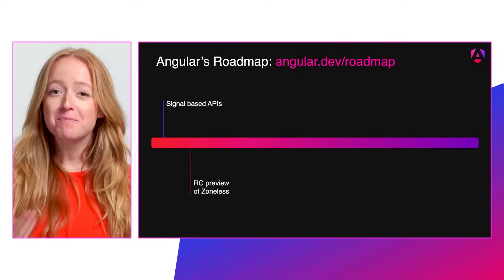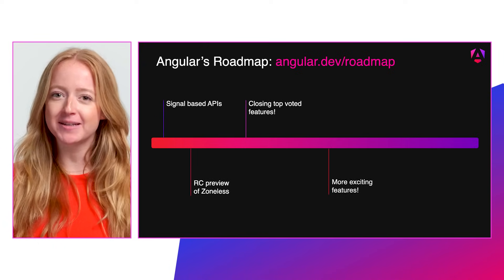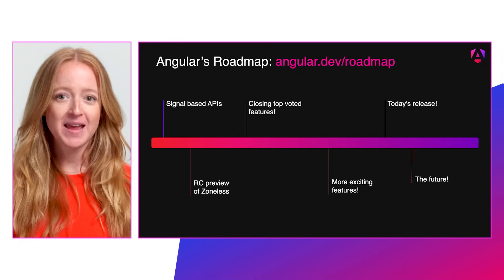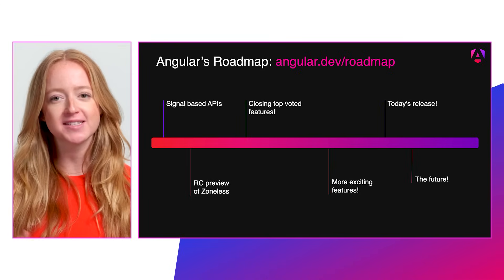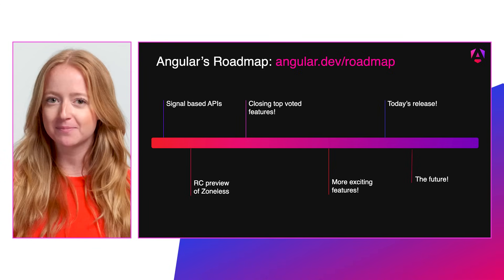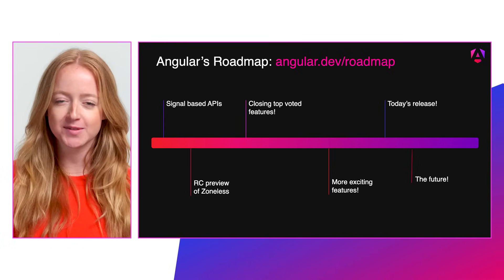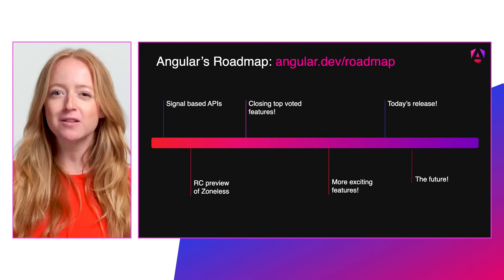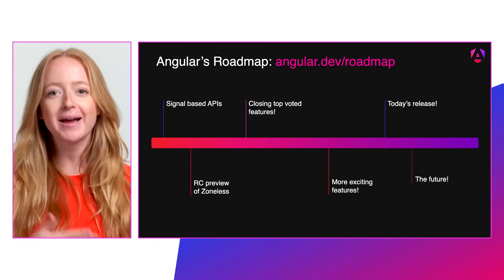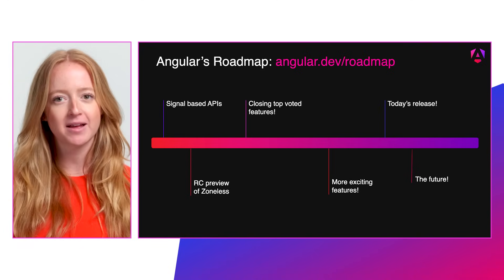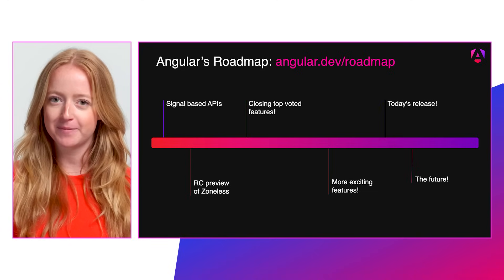Most of these features actually landed in a minor release leading up to today. That means you don't have to wait six months for the next enhancement to your Signal APIs, another step towards zoneless, or one of your top-voted issues being resolved. You can find out more about what we've been working on by heading over to our public roadmap at angular.dev/roadmap. Be sure to ng-update and check out our full changelog on GitHub for each and every feature, fix, and enhancement in V18.